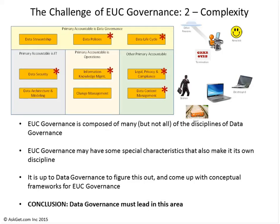Complexity is the other part of this challenge. Data governance consists of many sub-disciplines, each with their own challenges, methods, techniques, and sets of problems. We have to master them all in order to do data governance well, especially to do end-user computing data governance well. End-user computing governance in itself has special characteristics that might make it its own discipline. We have some assistance from industry groups like EUSPRIG, some from vendors, and some focus from regulators — but ultimately data governance is going to have to lead in this area, synthesize all of these requirements, and come up with solutions.